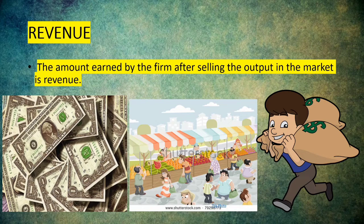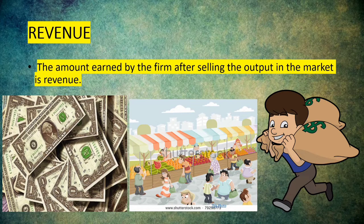Now, what is revenue? The amount earned by the firm after selling the output in the market is revenue. If you see these images, we see one person carrying bags — the firm produces the output and sells it in the market.